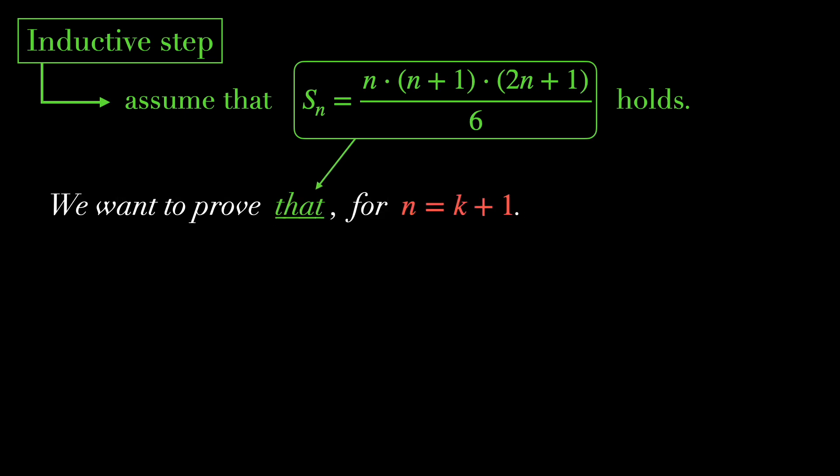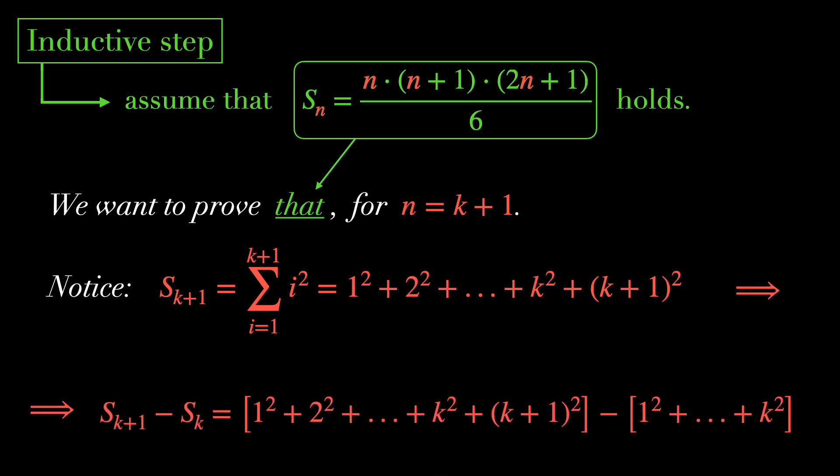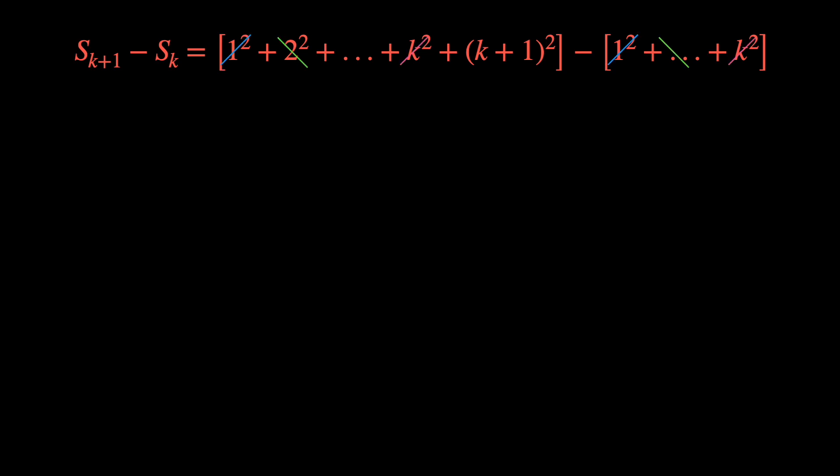In the inductive step, we assume that this expression for n equals k holds. And we want to prove that it also holds for n equals k+1. Notice that for k+1, the sum is the following. And if we subtract these two sums, we get simply (k+1)². Which implies that the sum for k+1 is the sum for n equals k plus the term (k+1)².